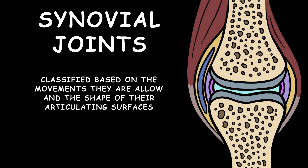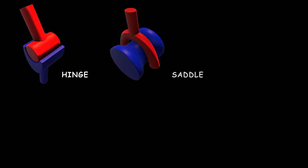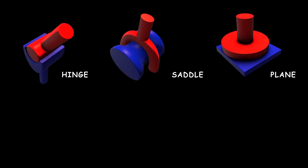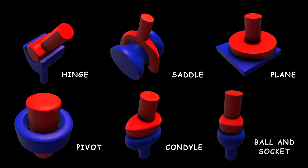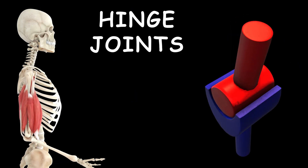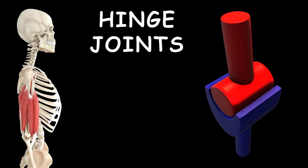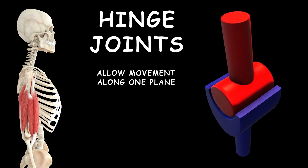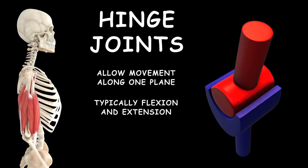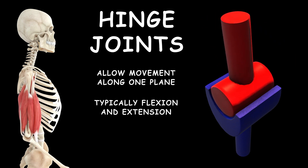Synovial joints can be classified based on the movements they allow and the shape of their articulating surfaces into hinge, saddle, plane, pivot, condyle, and ball and socket joints. Hinge joints, such as the elbow joint, allow movement along one plane, typically flexion and extension.